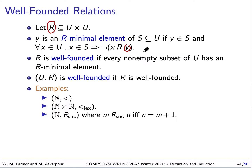Well-founded relations can be orders, but they don't have to be — we're actually generalizing the notion of order here. We say that R is well-founded if every non-empty subset of U has an R-minimum element. And U, R is well-founded if R is well-founded.